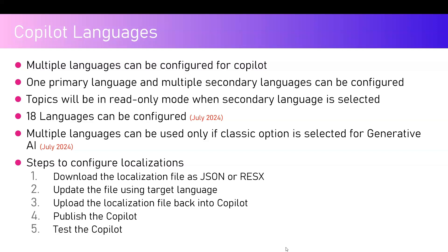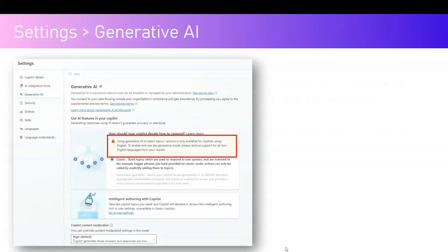I'm not going to do it for the entire copilot, but I'll show you the concept and you can extend it further. The setting I was talking about is under the settings area of Generative AI — there are two options: Classic and Generative. If you select Generative for your copilot, you can leverage artificial intelligence more deeply. It allows your copilot to use gen AI to identify the most appropriate combination of actions and topics automatically.